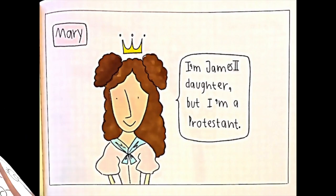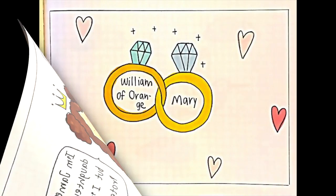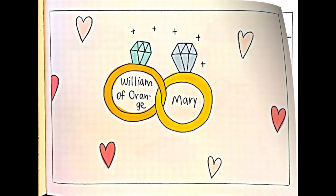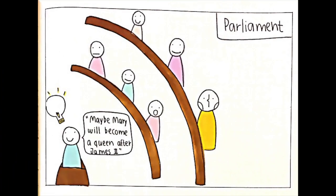Mary was James' oldest daughter. She was a Protestant, and she married the Dutch head of state, William of Orange. People thought that when James died, he would abdicate the throne to Mary, and Mary would bring back Protestantism.